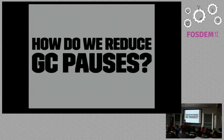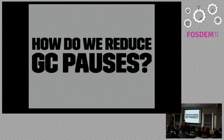We have to stop during garbage collection because if we allow Ruby to execute during garbage collection, we're going to lose track of which objects we've already looked at to see if they're free or not, and we're going to end up with memory bugs. So we have to stop execution and ask: which of these objects are being used and which are not?